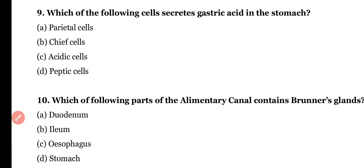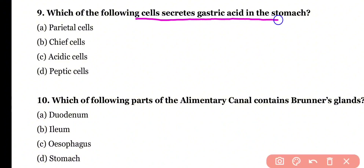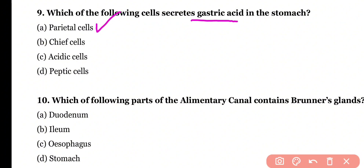Question 9. Which of the following cells secretes gastric acid in the stomach? Parietal cells, chief cells, acidic cells, or peptic cells? Correct answer is option A. Gastric acid or HCl in the stomach is released by parietal cells.